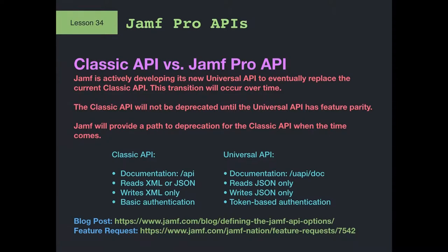What we're showing you today is what we're going to be referring to going forward as the classic API — that's Jamf's term for it, the one that supports XML. The other API, which used to be called the Universal API, is going to be renamed to just Jamf Pro API. Any time forward when you're having conversations, try to say 'classic API' or 'Jamf Pro API' so people understand the difference.